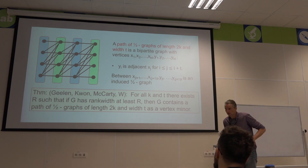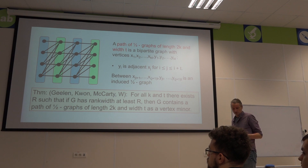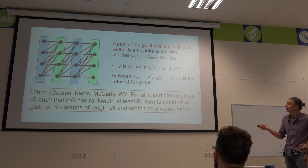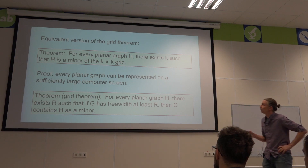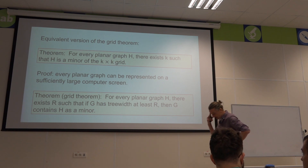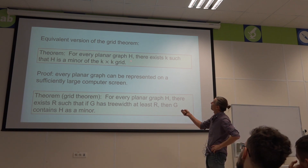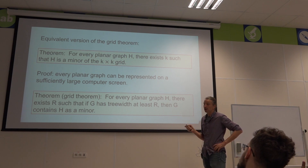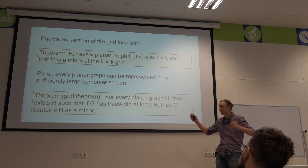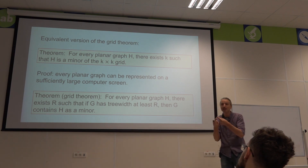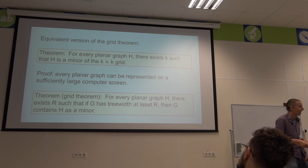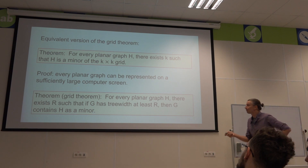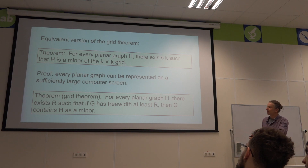There's an equivalent version of the grid theorem: since every planar graph H is a minor of some sufficiently large grid — you can see this because any planar graph can be drawn on a sufficiently large grid, i.e., a high-resolution computer screen — another formulation is that for every planar graph H there exists R such that if I have tree width at least R, then I contain H as a minor. The point is that circle graphs are the analog of planar graphs for vertex minors.